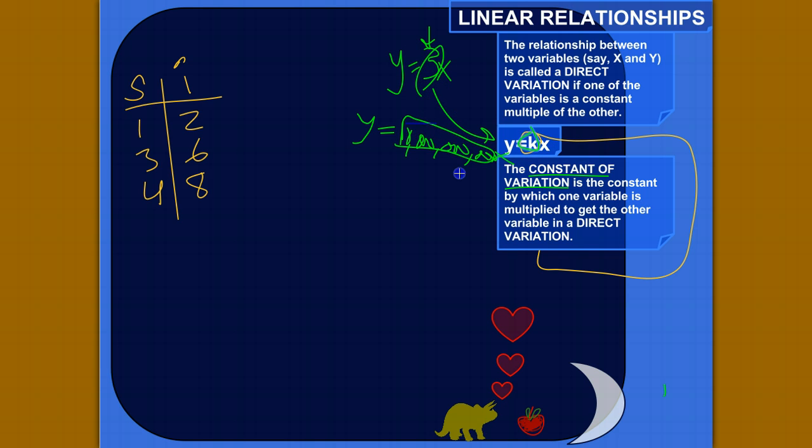So let's find the constant of variation, the c of v as I just now decided to call it, for this function here, this linear function. So let's find out what we have to multiply s by to get i, and to do that we can just divide the i's by the s's.